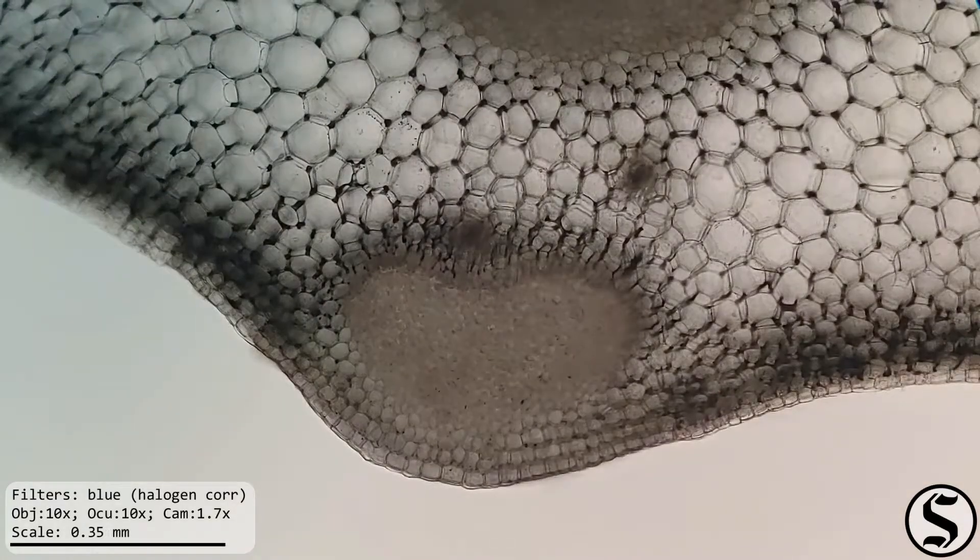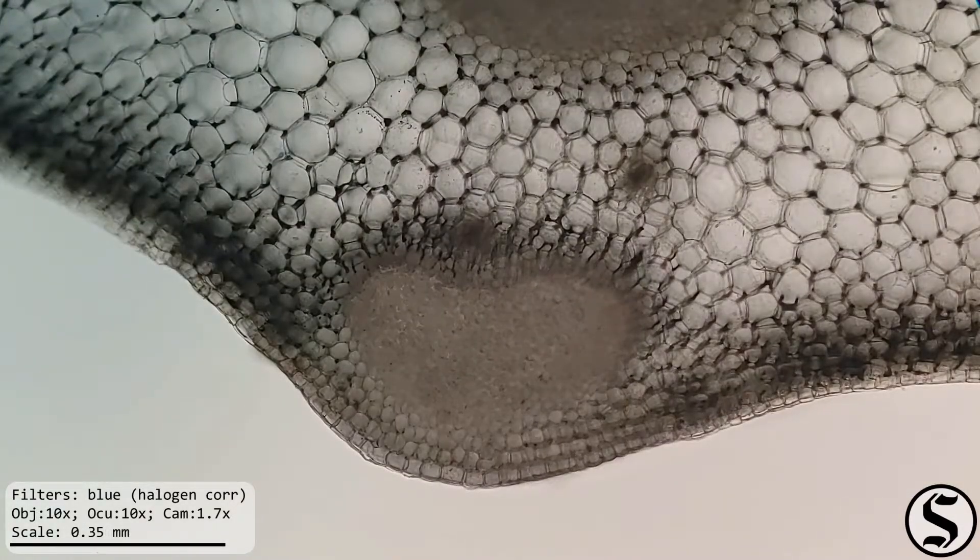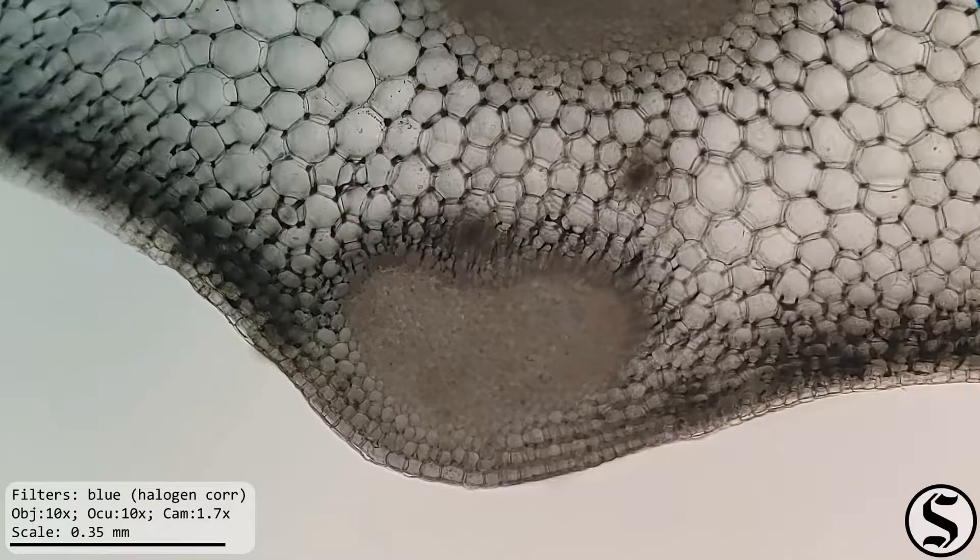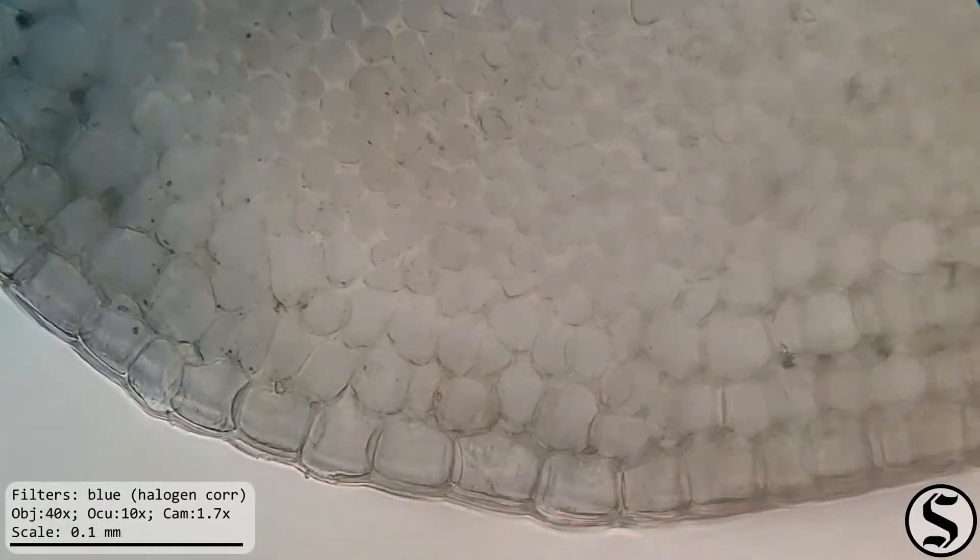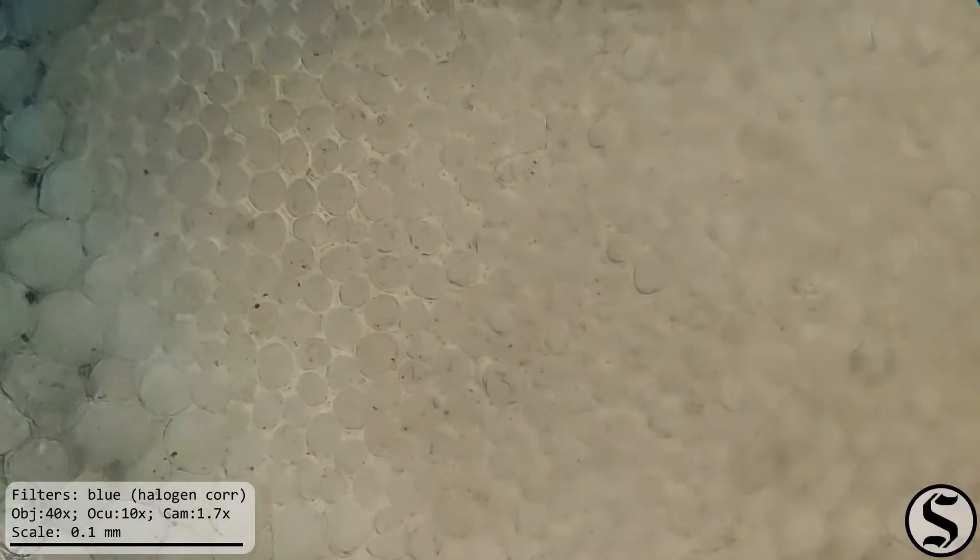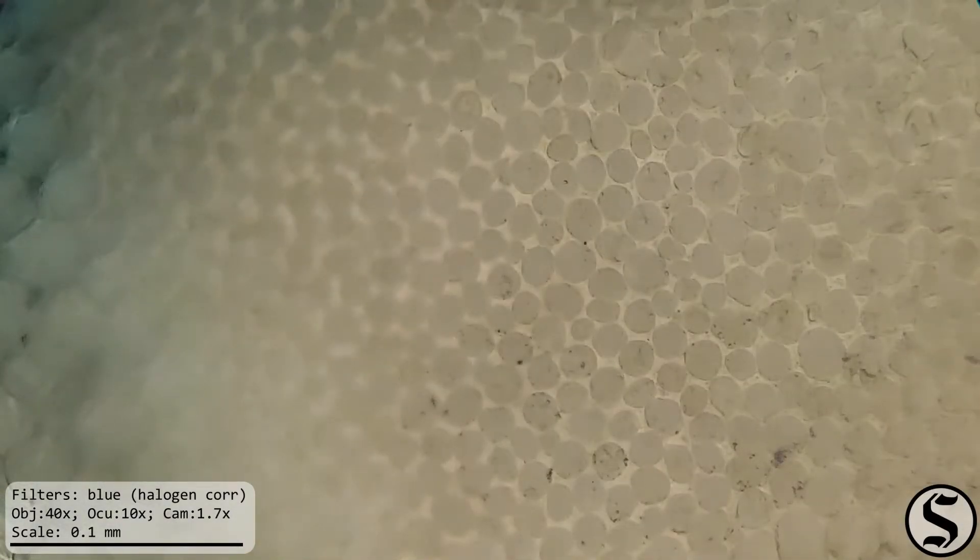And here's another one further along the outside. And we can see zoomed in on that that the cells in the collenchyma are of a distinctly different morphology from their surroundings which I think is really interesting.